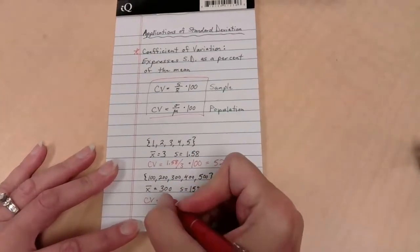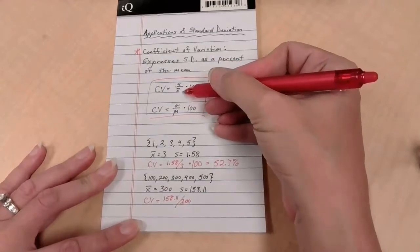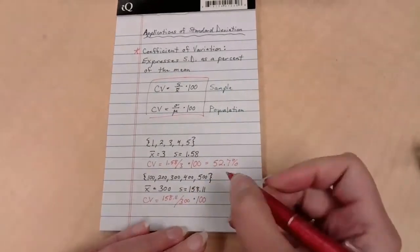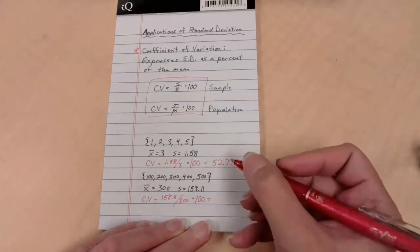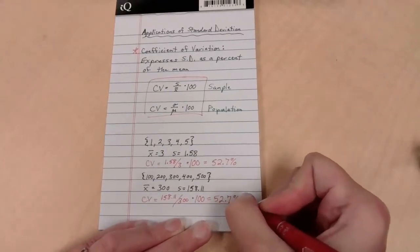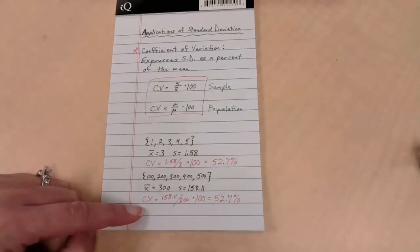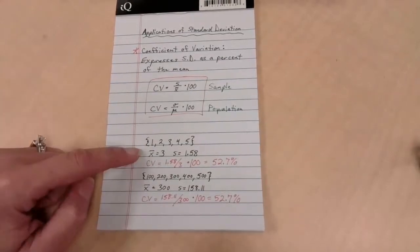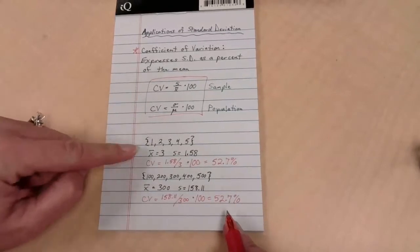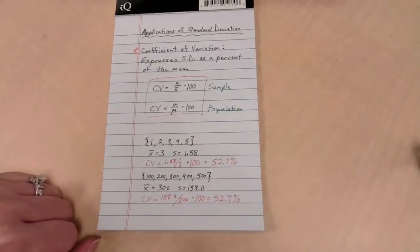Check this out. Coefficient of variation, this time we take 158.11 and divide it by 300. We're doing our standard deviation divided by our mean times 100. This is going to give me 52.7%. Even though this set of data has a much larger mean and a much larger standard deviation, because they are both much larger than the first set, the amount of variation is actually strikingly similar. This is what coefficient of variation is doing for us. It's allowing us to compare very different data sets based on simply a comparison without units, just between the spread and the mean.